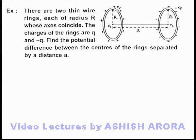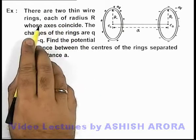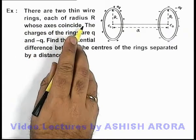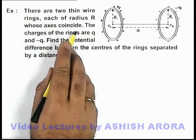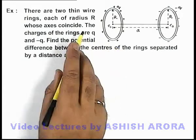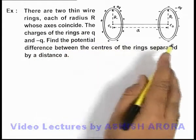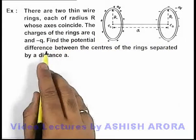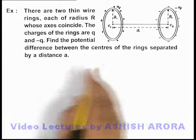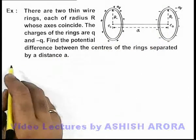In this example, we are given that there are two thin wire rings, each of radius R, whose axes coincide as shown in the figure. The charges of the rings are q and minus q. We are required to find the potential difference between the centers of the rings separated by a distance a.